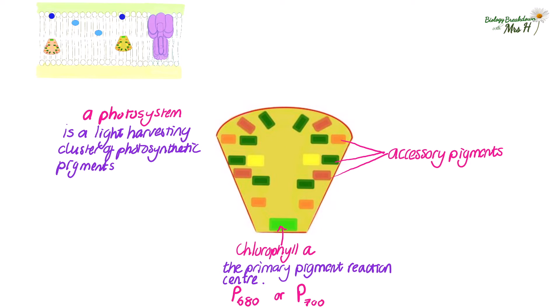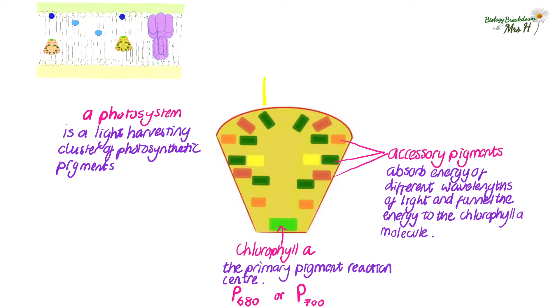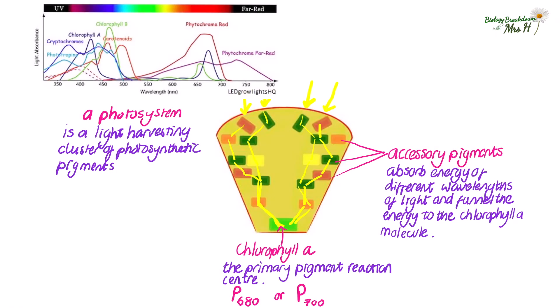The accessory pigments are really important for absorbing the energy of different wavelengths of light and funneling this energy to the chlorophyll A molecule. I'm sure you remember that different coloured pigments can absorb different wavelengths of light. So having a variety of different pigments maximises the absorption of energy that can be funneled to the chlorophyll A molecule. You might see different absorption peaks represented by an absorption spectrum like this.